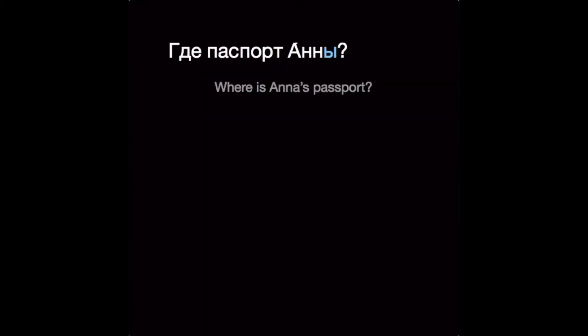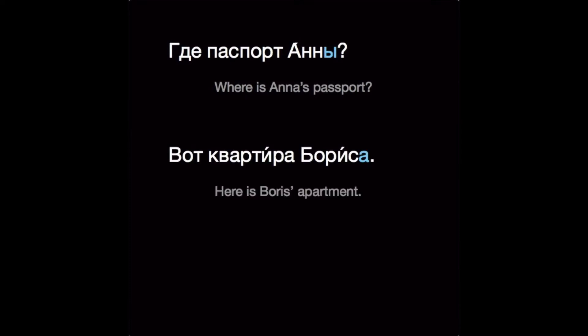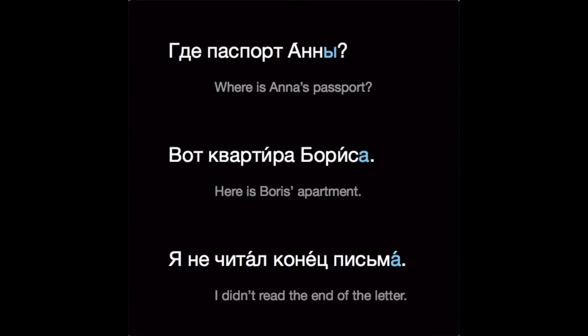Где паспорт Анны? Вот квартира Бориса. Я не читал конец письма. In these examples, we're talking about possession or attribution. But notice how the endings of the nouns are changing: Анна becomes Анны, Борис becomes Бориса, Письмо becomes Письма. These are genitive case endings, and one of the most common uses of the genitive is to indicate ownership, possession, or attribution. We'll also use them after numbers, with negation, and in many other contexts, so you'll be using these endings all the time.